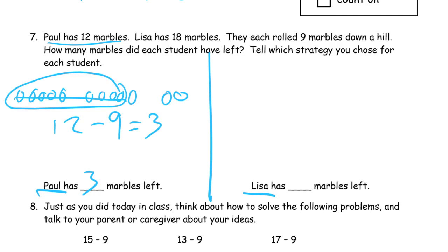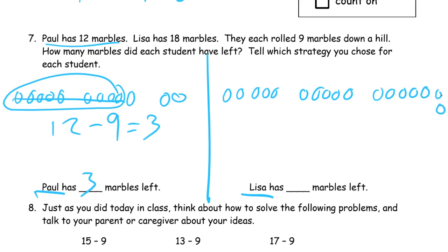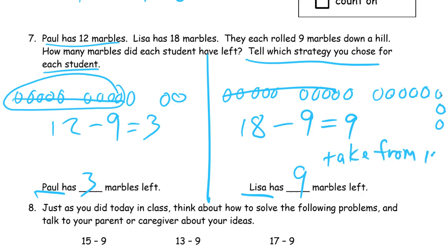Lisa has 18. 1, 2, 3, 4, 5, 6, 7, 8, 9, 10, 11, 12, 13, 14, 15, 16, 17, 18. And then she's going to cross out 9, and there's going to be these. 8 plus 1 more, 9. She's going to have 9 left. That was 18 minus 9 equals 9. Now, if you're telling which strategy we chose, I'm going to say here, take from 10. And here, I counted. Count on.